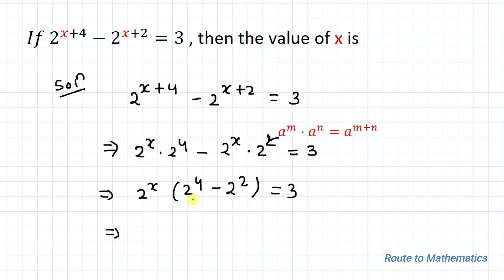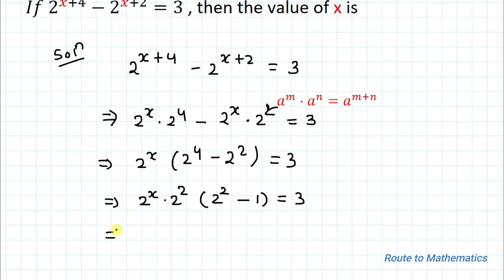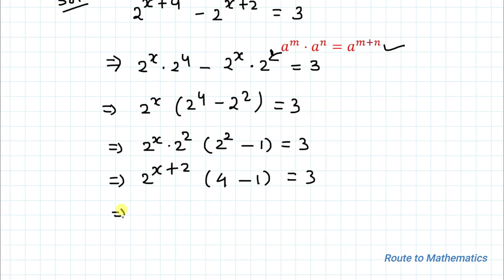We can also factor out 2^2, giving 2^(x+2) times (2^2 minus 1) equals 3. Since 2^2 equals 4, this becomes 2^(x+2) times (4 minus 1) equals 3, so 2^(x+2) times 3 equals 3.